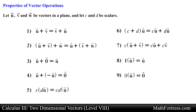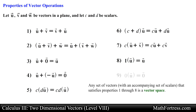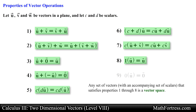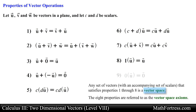These 9 properties of vectors can be verified either geometrically or algebraically. In general, any set of vectors with an accompanying set of scalars that satisfies properties 1 through 8 is a vector space. The 8 properties are referred to as the vector space axioms. In essence, the set of vectors in the plane with a set of real numbers or scalars forms a vector space. Vector spaces will be discussed in great detail in a first course in linear algebra, usually taken during or immediately after this course.